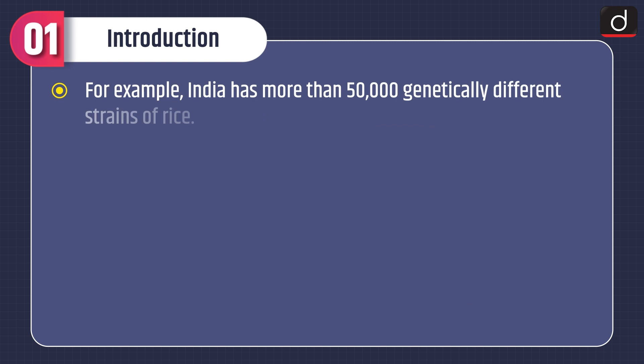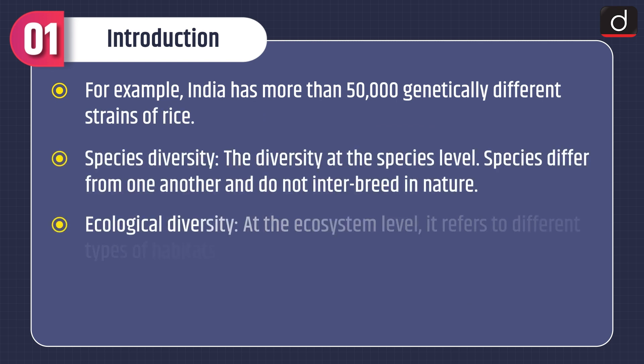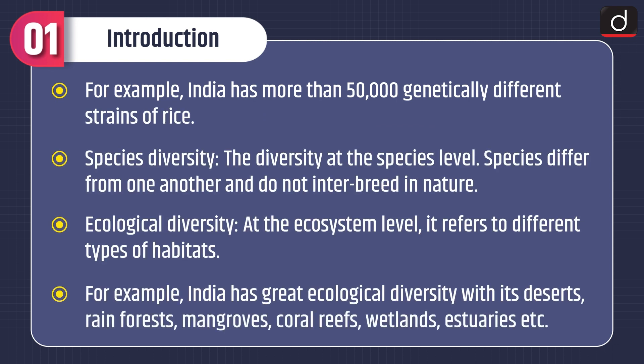For example, India has more than 50,000 genetically different strains of rice. Species diversity refers to diversity at the species level — species differ from one another and do not interbreed in nature. Ecological diversity refers to different types of habitats at the ecosystem level. For example, India has great ecological diversity with its deserts, rainforests, mangroves, coral reefs, wetlands, estuaries, etc.